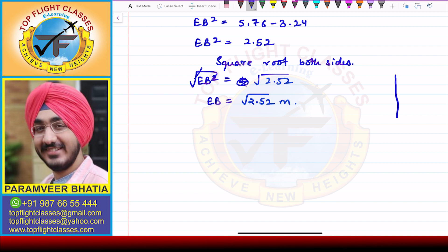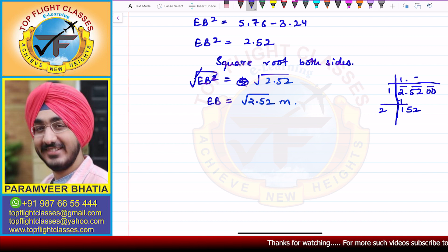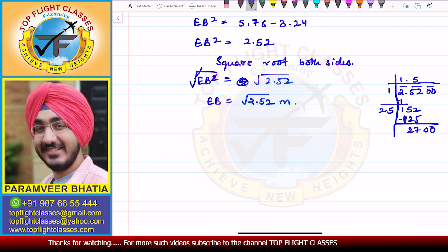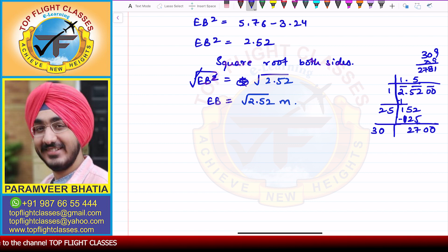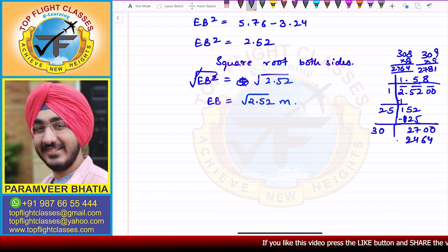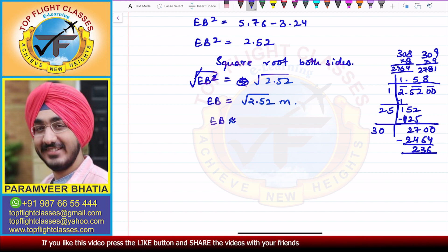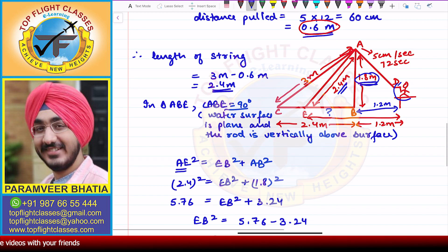Calculating √2.52, we get approximately 1.58. Therefore EB is approximately equal to 1.58 meters. Now we need to find the total horizontal distance between Nazima and the fly. We have already found EB = 1.58 meters, and the distance BD = 1.2 meters is given.